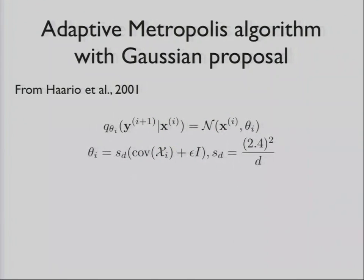There's an adaptive method that's already proposed a while ago, which basically proposes with a distribution that is centered on the current sample, and it uses as its covariance matrix the empirical covariance matrix plus a bit of noise, and that's scaled by a certain amount. That amount seems a bit arbitrary, but it's actually based on a theoretical result that says that the optimal acceptance ratio should be that.